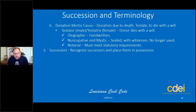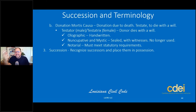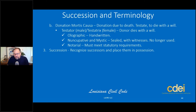We have a term called succession. Succession is the event that recognizes successors — those who are in line to receive possession of an estate. It could be property along with other types of assets: investment accounts, CDs, IRAs, and so on. Succession is the civil code law that recognizes successors and places them in possession of the estate.